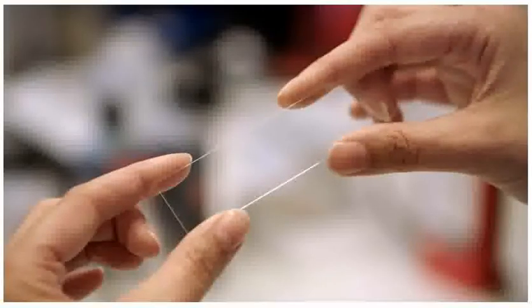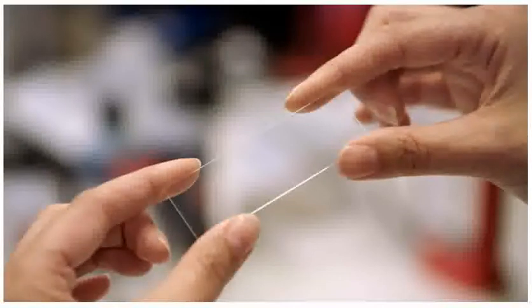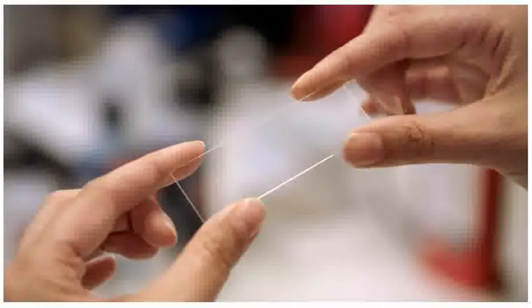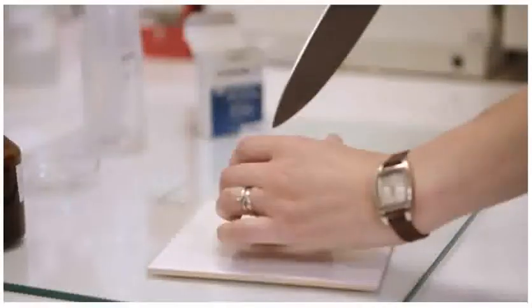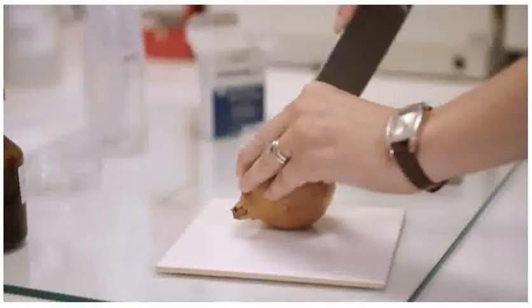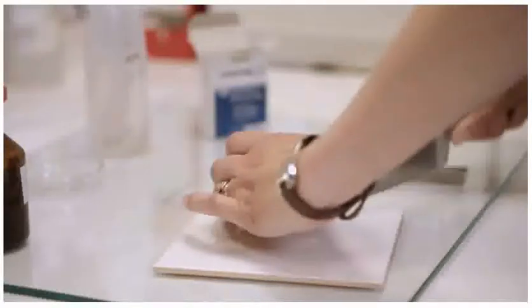Slides and cover slips are fragile. They are held carefully at the edges to prevent breakage and to prevent getting fingerprints on the glass. A sharp knife is used to cut the onion on a white tile. Care is taken when using the sharp knife.